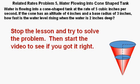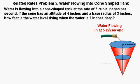Stop the lesson and try to solve the problem, then restart the video to see if you got it right. Let's start labeling our drawing. We have water flowing into the cone at a rate of 5 cubic inches per second. The height of this cone-shaped tank is 4 inches and its radius at the top of the cone is 3 inches.